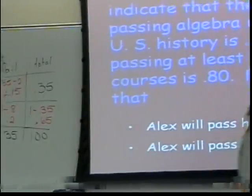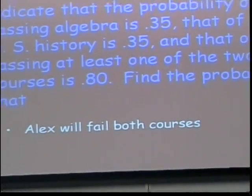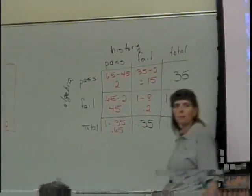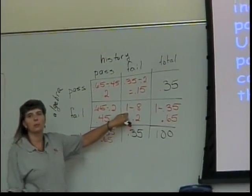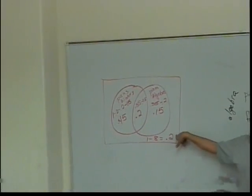What about this one? What's the probability that Alex will fail both courses? 0.2. Where is that in my table? Right here. Where is it in my Venn diagram? Outside everything.